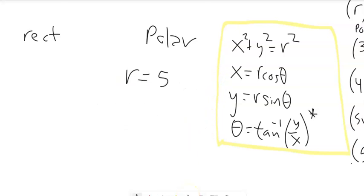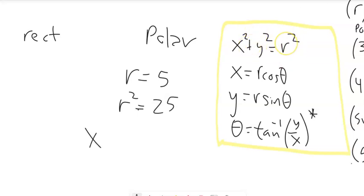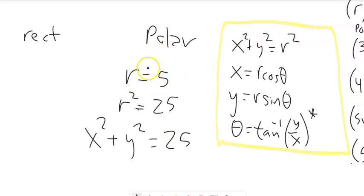Last one: r = 5. Square both sides: r² = 25. Since r² = x² + y², we get x² + y² = 25 — back to a circle with radius 5. Any angle you want at radius 5, or equivalently x² + y² = 25.